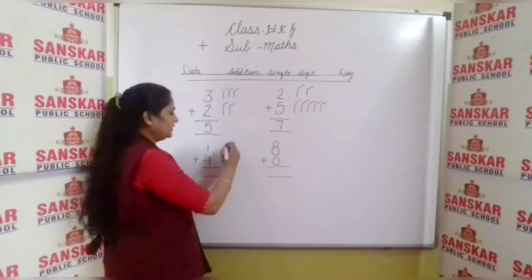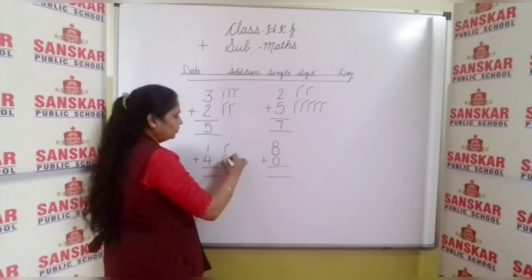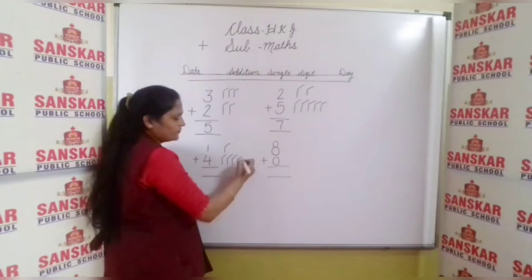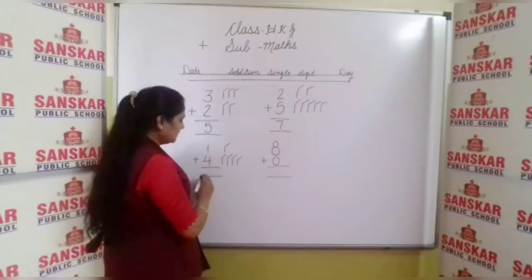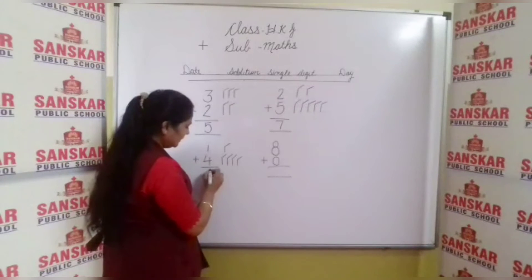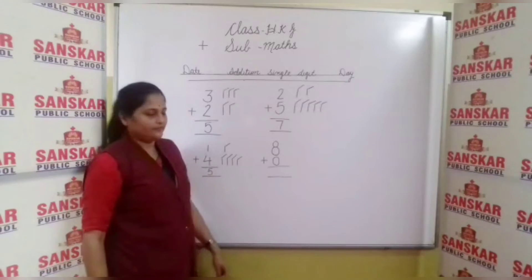Now count it: one, two, three, four, and five. Which number do we have to make? Number five. So write down number five.